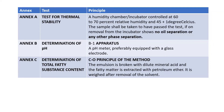Annexure B covers determination of pH, which must be within the range of 4 to 9, or 5 to 10 for creams containing borax or beeswax — measured using a calibrated pH meter. Annexure C covers determination of total fatty substance content: the principle is that the emulsion is broken with dilute mineral acid, the fatty matter is extracted with petroleum ether, and weighed after removal of the solvent.